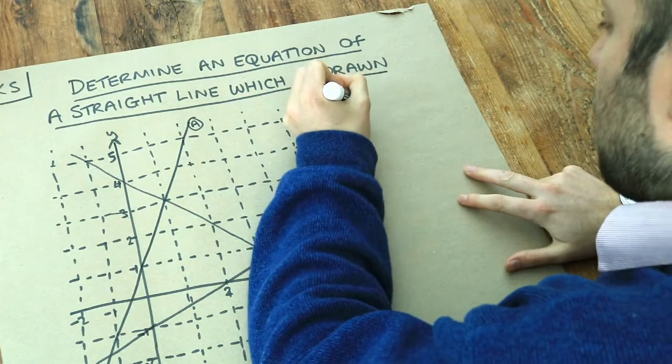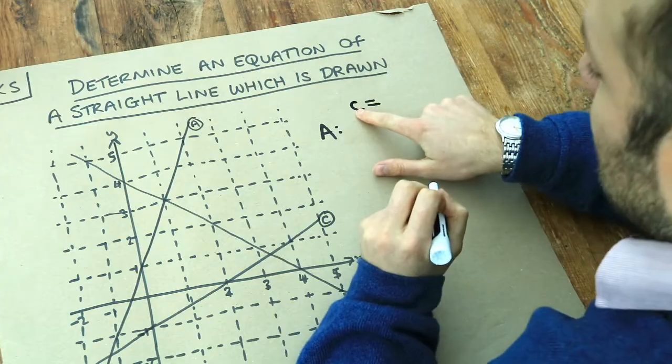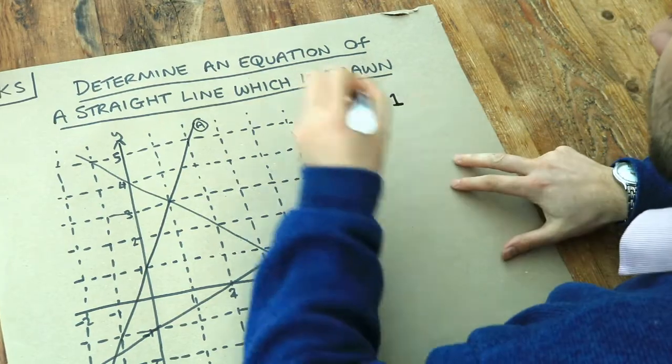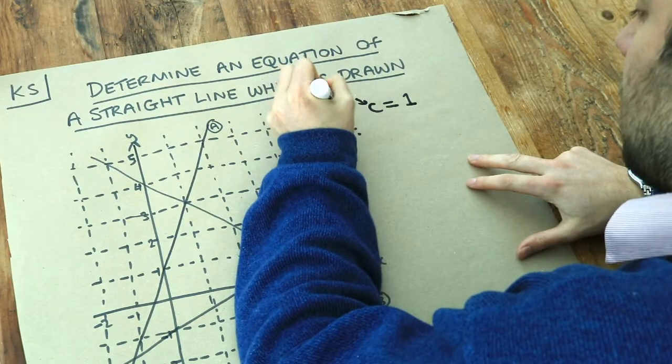So the y-intercept is one, and remember we can use the letter C to represent y-intercept. So the y-intercept is one, that means y-intercept.